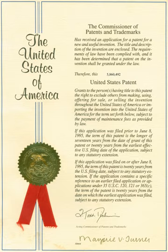Primary incentives embodied in the patent system include incentives to invent in the first place, to disclose the invention once made, to invest the sums necessary to experiment, produce and market the invention, and to design around and improve upon earlier patents. Patents provide incentives for economically efficient research and development.